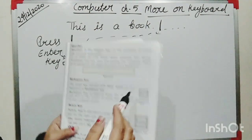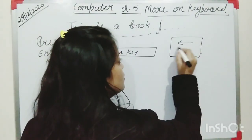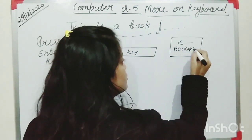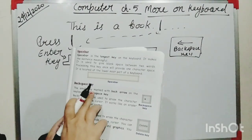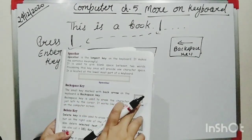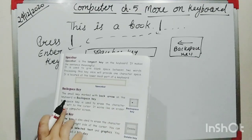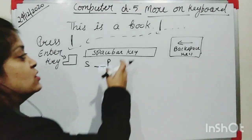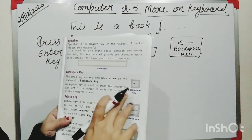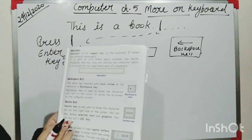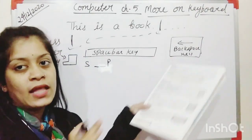Next is the Backspace key. The small key marked with a back arrow on the keyboard is the Backspace key. It is used to erase the character just to the left of the cursor. It works like an eraser on the computer screen.